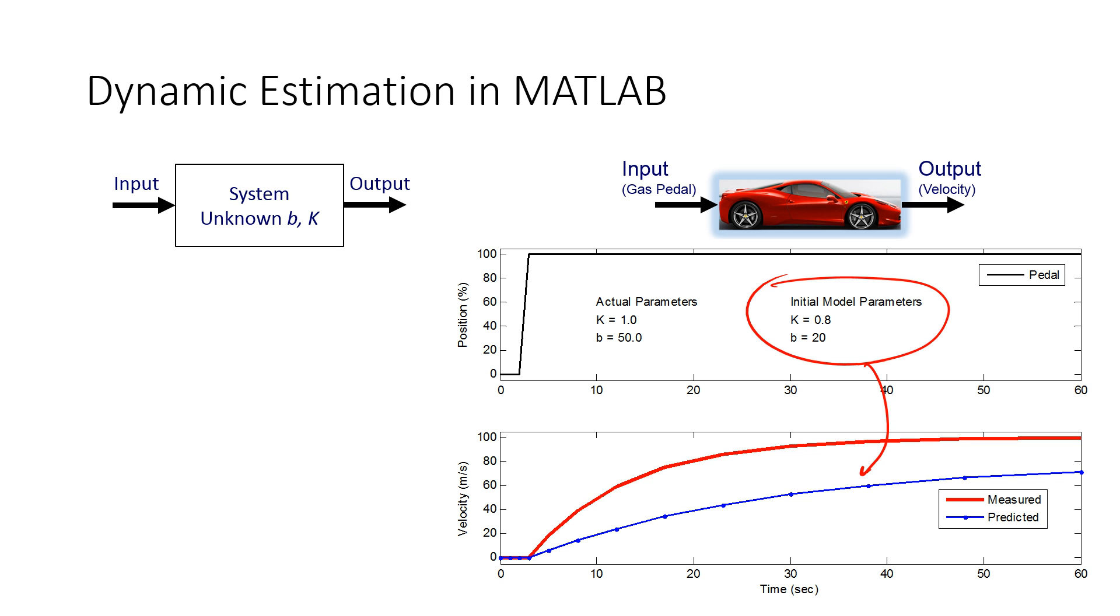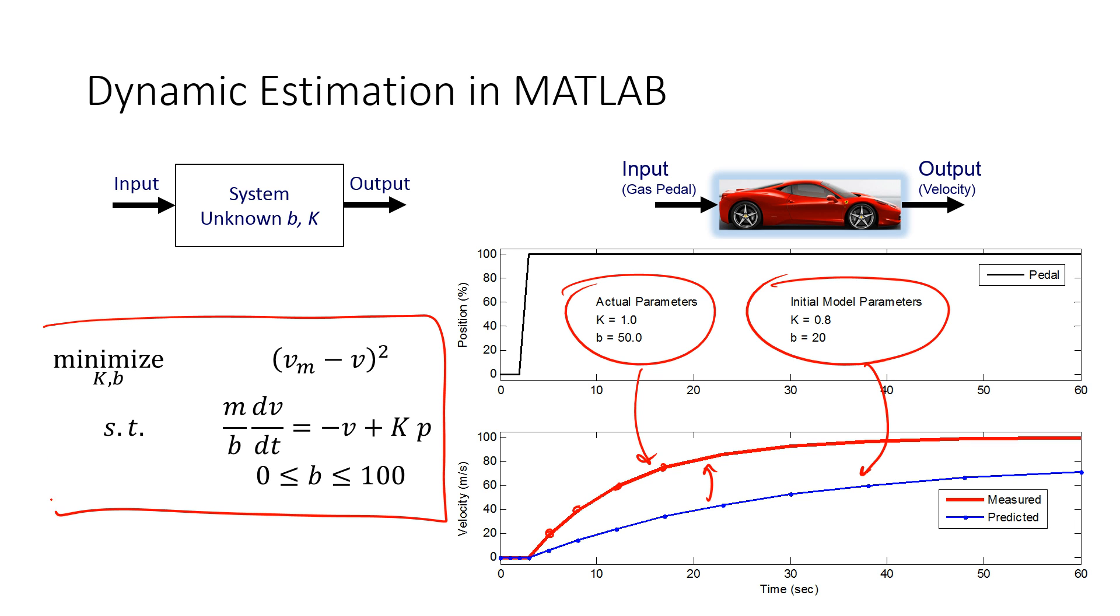Actually, the blue line. That's the predicted. But my actual parameters are going to give me this red line right here. So I want to try to shift this up so it's aligned with the one above it at all of these time points where I took the measurements. And so I'm going to set up this estimation problem using optimization.